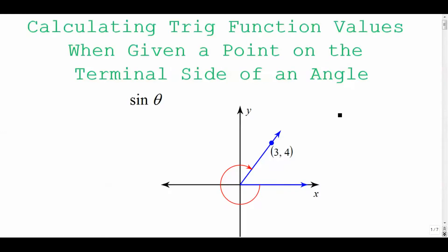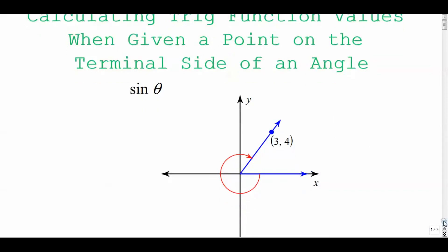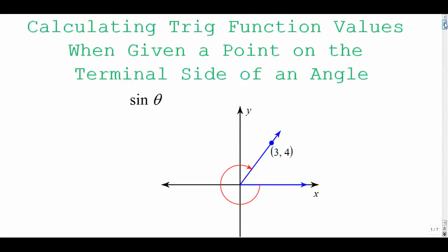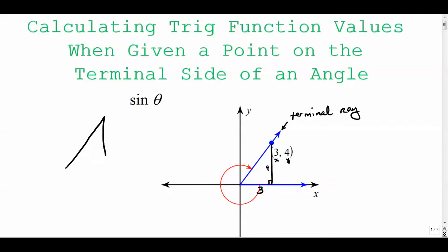In this video in our trig unit we're going to learn how to calculate trig function values when given a point on the terminal side of an angle. In this case I am looking for the sine of this angle, and the angle stops on the terminal ray. On that terminal ray is the point (3, 4), so that point is over three and up four — it's a right triangle.